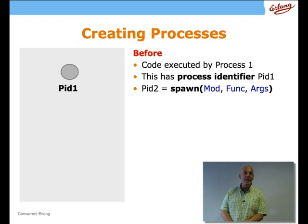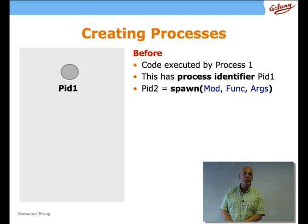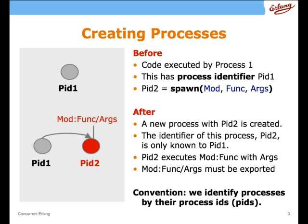Processes are identified by process identifiers, called PIDs in Erlang. You'll see variables called PID1 and so on all the way through this part of the course. Our convention when talking about concurrency is to identify processes by their PID. So instead of saying 'process with PID1', we'll just say PID1, and instead of 'process with PID2', we'll say PID2.